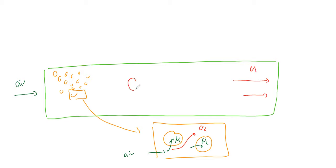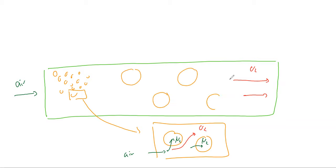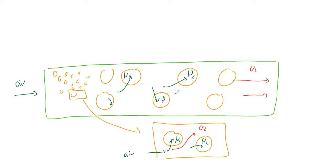So we're going to have the particles — not to scale — and what will happen is the nitrogen will go into the particles and oxygen comes out. That's a nice situation because it means if we open the outlet we're going to have oxygen-rich gas coming out of it.